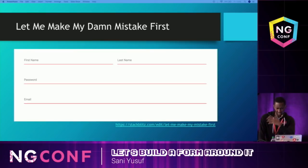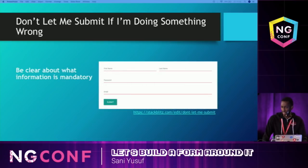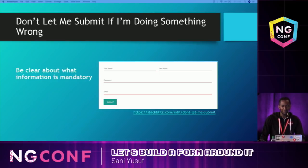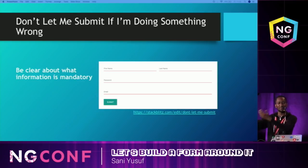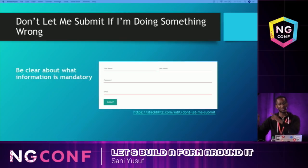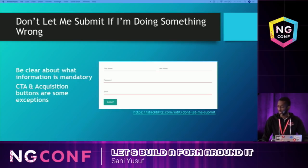For every example I show, there's a StackBlitz link you can see afterward. Don't let me submit if I'm doing something wrong. You should never let a user submit a form if you know they're already doing something wrong. Be very clear about the information that's mandatory. There's no point submitting a form if you need me to enter a password that's eight characters long — don't let me submit and then come back and tell me. Doesn't make sense. You're wasting my time. I'm going to go somewhere else and spend my money. But there are some exceptions — call-to-actions and acquisition buttons.